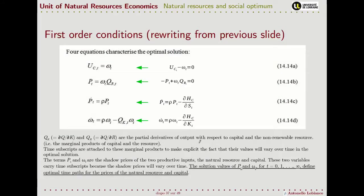A few notes on these equations before we analyze them in more detail. First, let's expand this derivative — this is equal to zero because the Hamiltonian doesn't contain the stock of natural resources. When we develop this derivative, we obtain this term here: q_k and q_r. These are the first derivatives of the production with respect to the two inputs, the two factor production factors.